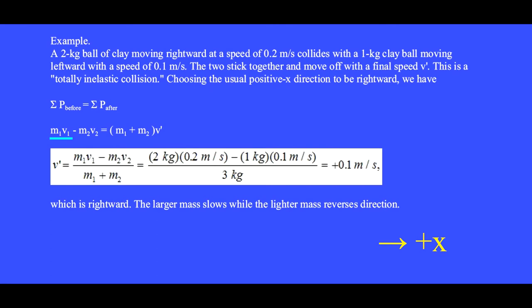The rightward moving mass m1v1 is moving in the positive x direction. The smaller and slower mass m2 is moving in the negative x direction, so it gets a minus sign. We write m1v1 minus m2v2 equals the final momentum (m1 plus m2) times v-prime, because the two masses have joined together. Solving for v-prime gives positive 0.1 meters per second, which is rightward. The larger mass slows while the lighter mass reverses direction.